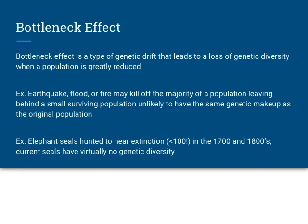The bottleneck effect is a type of genetic drift that leads to a loss of genetic diversity because the population is greatly reduced. Usually there's some catastrophic event — like an earthquake, flood, or fire — that kills off most of the population, leaving behind a small surviving group. Usually those few individuals do not have the same genetic makeup as the original population. For example, elephant seals were hunted to near extinction with fewer than 100 remaining in the 1700s and 1800s. The survivors were not a good representation of the original genetic makeup, so current seals have almost no genetic diversity.